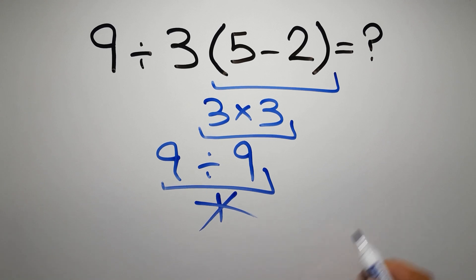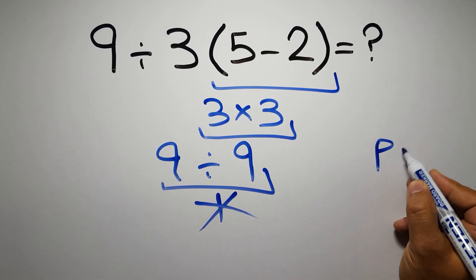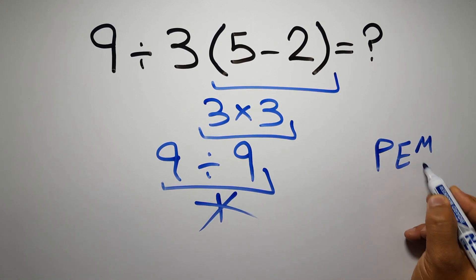Because according to the order of operations, first we have to do parentheses, then exponents, then multiplication or division.